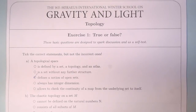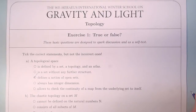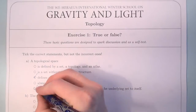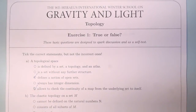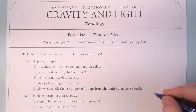A topological space always has integer dimension — that is also incorrect since we cannot speak of dimension when dealing with a topological space. And last, a topological space allows us to check the continuity of a map from the underlying set to itself. Yes, that is correct. A topological space is the minimal structure required to define the continuity of a map. So in part A we had two correct answers: three and five.